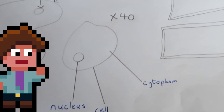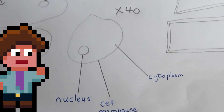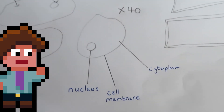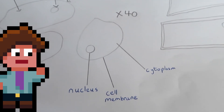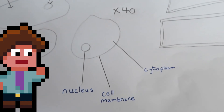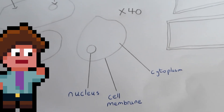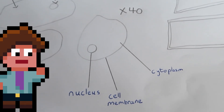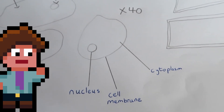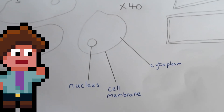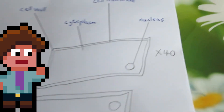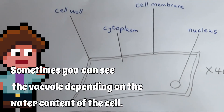Here are some drawings I've produced to show you what you are expected to draw. Notice we only draw and label the nucleus, cytoplasm, and cell membrane for the cheek cell, because at ×40 you can't see the mitochondria.